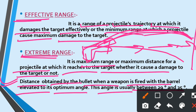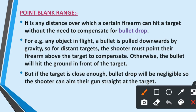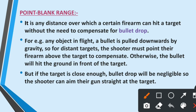So in this condition, the bullet will reach maximum distance — that is extreme range. To get maximum range coverage, the barrel is elevated at this angle. Now, point blank range — what happens here? Point blank range is any distance over which a certain firearm can hit a target without the need to compensate for bullet drop.